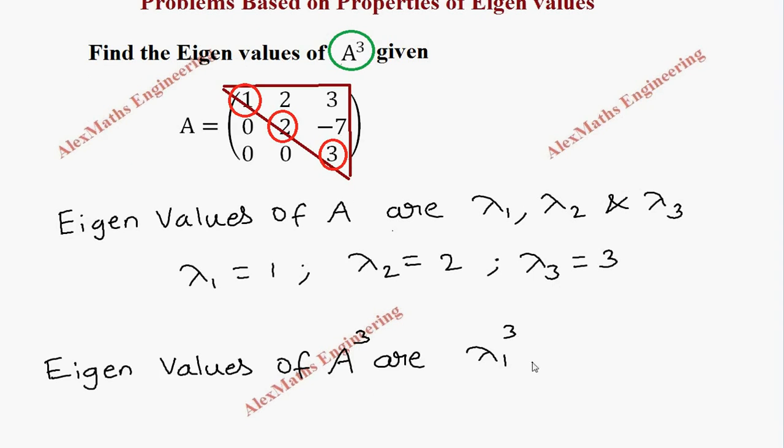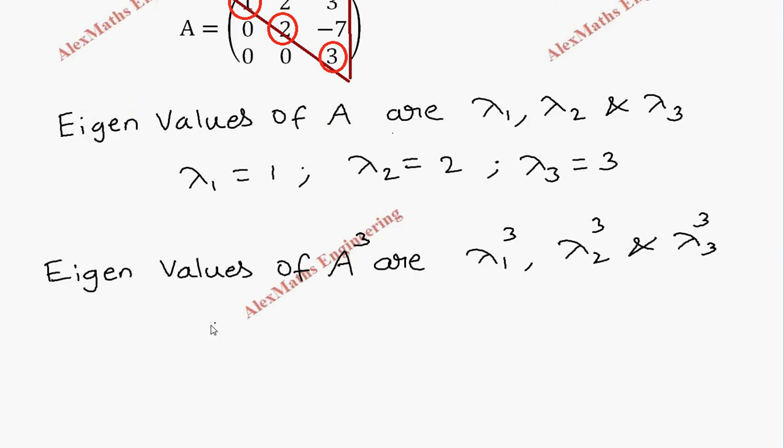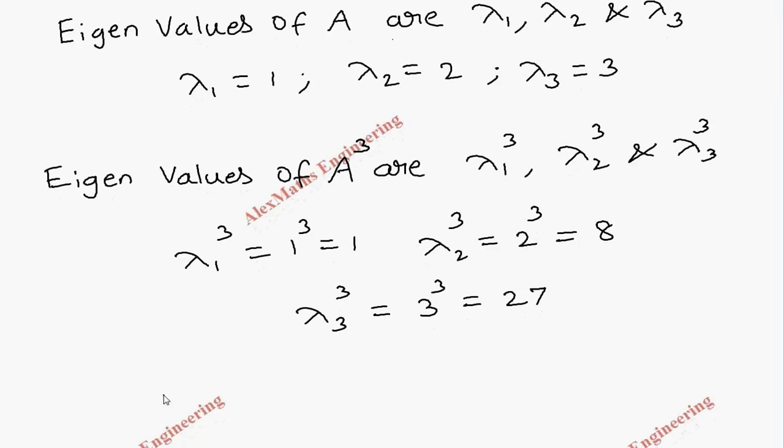So lambda 1 cubed is nothing but 1 cubed which is 1, then lambda 2 cubed is nothing but 2 cubed which is 8, then lambda 3 cubed is nothing but 3 cubed which is 27. Therefore the eigenvalues are 1, 8, and 27.